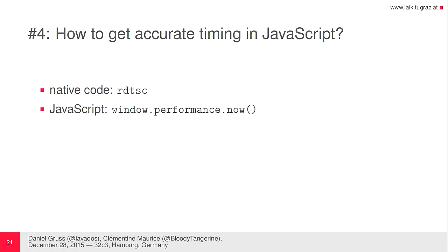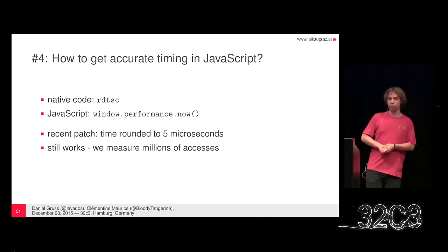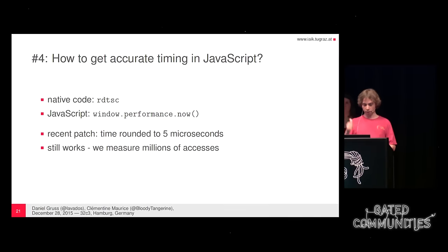How do we get accurate timing in JavaScript? We need it for two purposes: first, to interconnect page information if we don't have enough congruent addresses on a single page; second, to decide whether an address is cached — whether eviction was successful. In native code you can use rdtsc for sub-nanosecond timestamps. In JavaScript it's more complicated, but window.performance.now works well if you have enough accesses. There was a recent patch to prevent cache attacks in JavaScript that rounds the timer to five microseconds, but this does not help against row hammering because we perform millions of accesses and consume more than five microseconds.